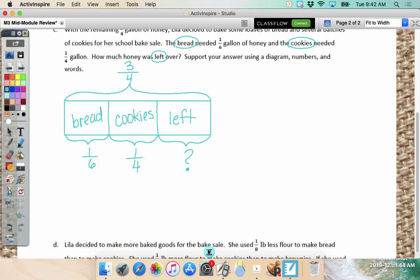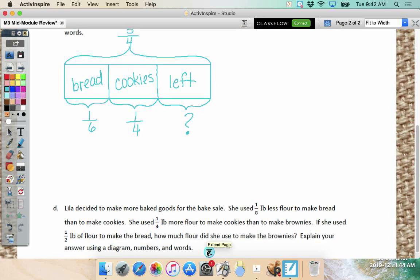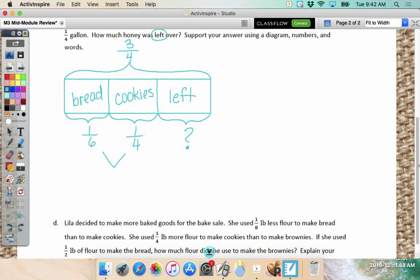All right. Yasmin, do I have a total? Yeah, they actually gave it to us. With the remaining three-fourths gallon of honey. So, this is not one whole, is it? No. It's three-fourths. But, we'll still use the same strategy. Add it together, subtract from the total. And we can do this. So, bread needed how much? One-sixth. Bread. And cookies needed? One-fourth. And do we know the left? No. Okay. So, let's solve this. This is the same denominator as last time. I want to use method two just to practice.